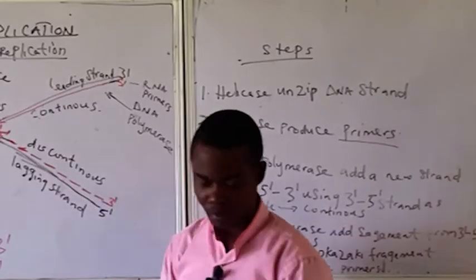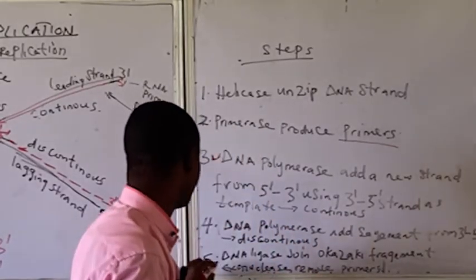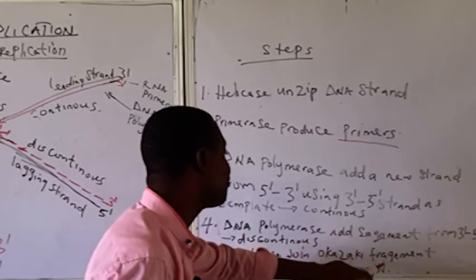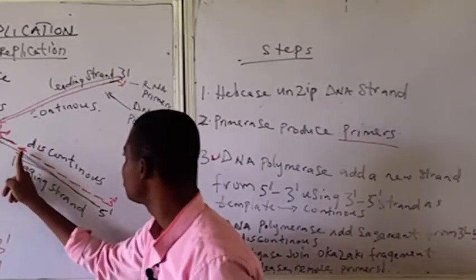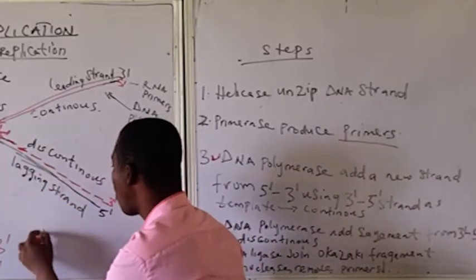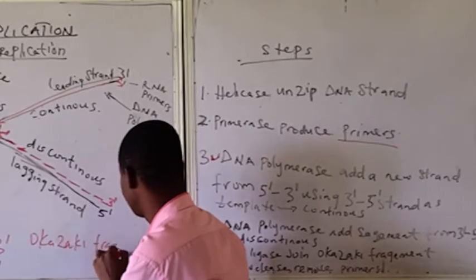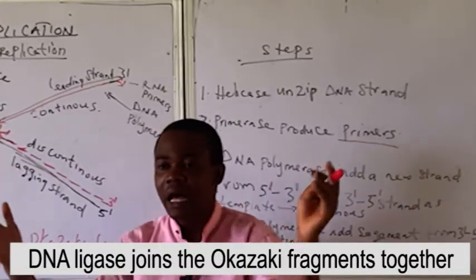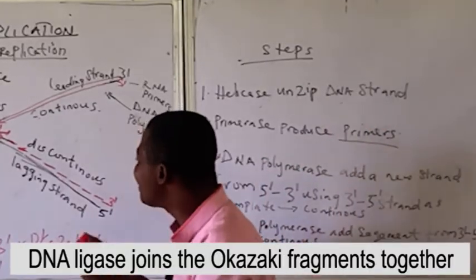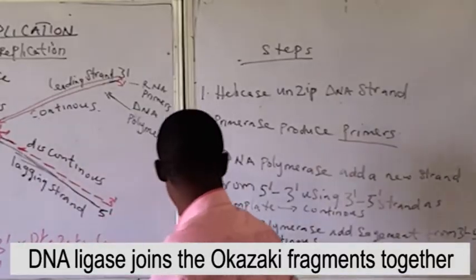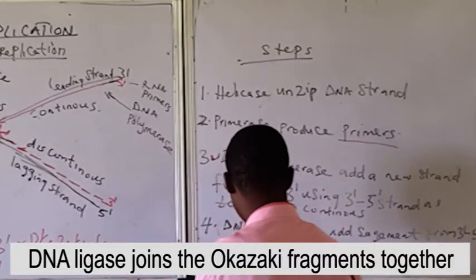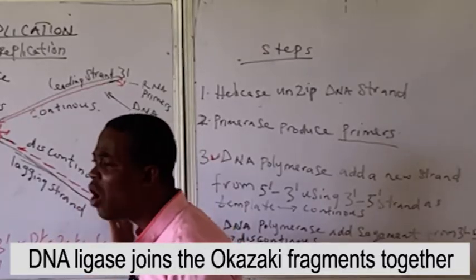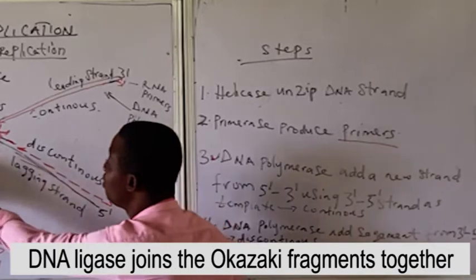After replication has taken place, DNA ligase will join the Okazaki fragments together. These small fragment segments on the lagging strand are called Okazaki fragments, and they need to be joined together. The enzyme that joins them is called DNA ligase, which joins the Okazaki fragments along the lagging strand, which is the 5' to 3' strand.